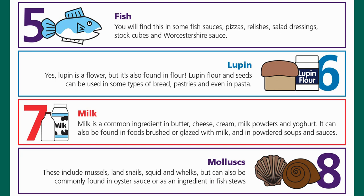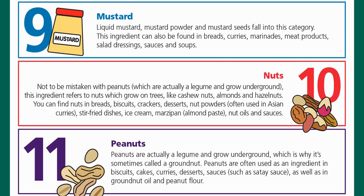(4) Eggs — often found in cakes, some meat products, mayonnaise, mousses, pasta, quiche, sauces, pastries, or foods brushed or glazed with egg. (5) Fish — found in some fish sauces, pizzas, relishes, salad dressings, stock cubes, and Worcestershire sauce, which contains anchovies. (6) Lupin — lupin flour and seeds used in some breads, pastries, and pasta. (7) Milk — butter, cheese, cream, milk powders, and yogurt, also found in foods glazed with milk and powdered soups and sauces.